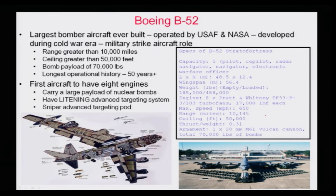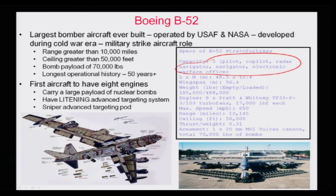The B-52 Stratofortress is an aircraft many of us know from the Vietnam War. It has the dubious distinction of being one of the largest bombers ever built, but also the longest operational aircraft in the world — still operating after more than 50 years. It requires five crew members: one pilot, a copilot, a radar officer, an electronic warfare officer, and a navigator. The empty weight is 185,000 pounds and fully loaded is 488,000 pounds — approximately three times the empty weight. It is the only aircraft to carry eight engines.